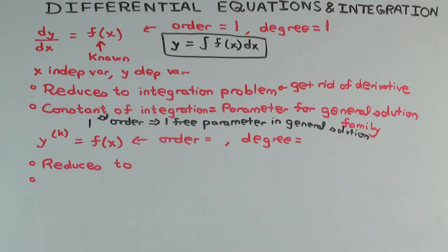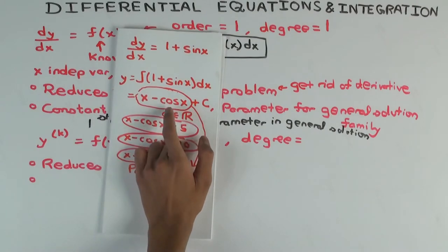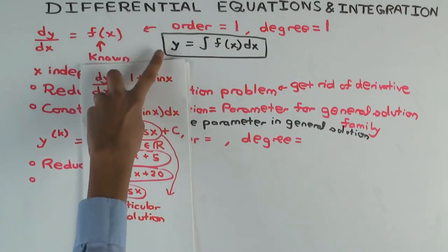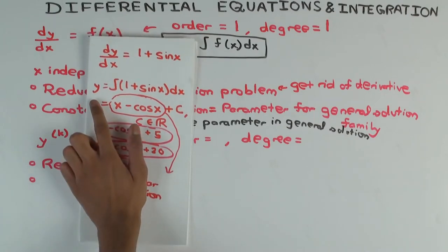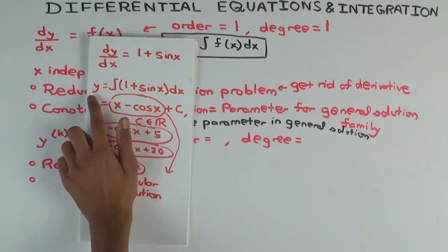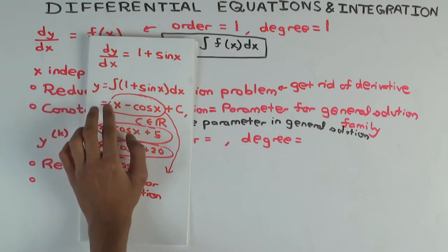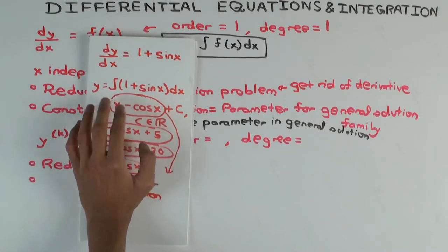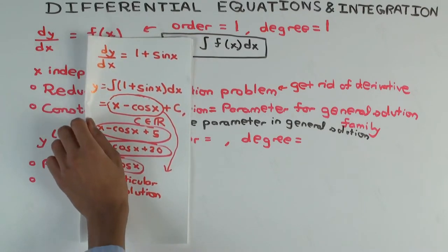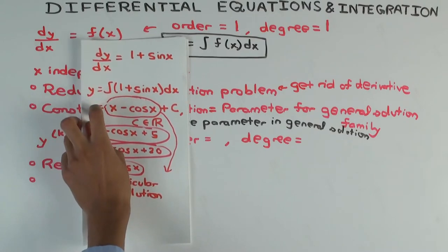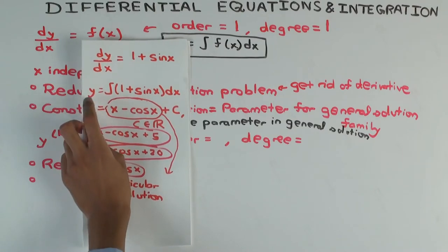One more thing: in our case, the constant appeared simply as a particular solution plus a constant. However, with more complex differential equations, by the time you do the integration the x and y are mixed together, so you get some relation between x, y, and a constant rather than y equals something plus a constant. Use this as an initial guide, but not everything works like this.